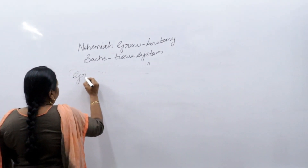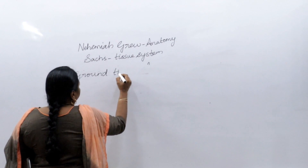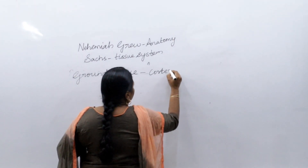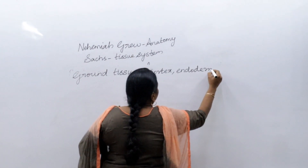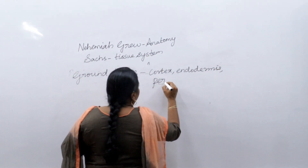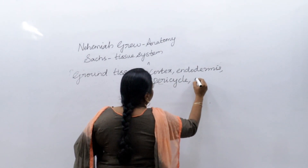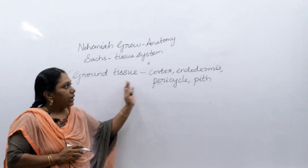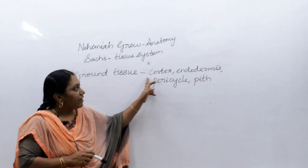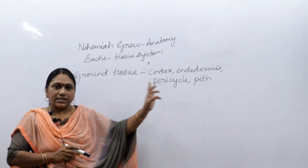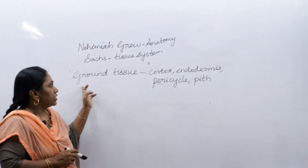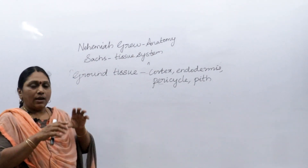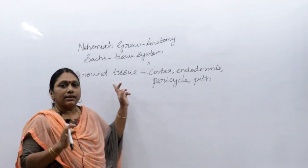The second type is the ground tissue system. When you read in detail about the root, stem, or leaf, you will better understand what is cortex, endodermis, pericycle, and pith. All four of these constitute the ground tissue system — everything in the plant body between the epidermis and the vascular tissue.